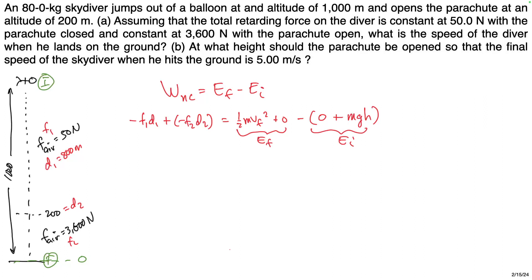Checking what I know: F1 — yes. D1 — yes. F2 — yes. D2 — yes. One-half — yes. Mass of the skydiver — yes, it's given. V-final — no, but that's what I want. G — yes. H — yes. I've got everything I need. I just have to solve for v-final.